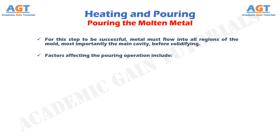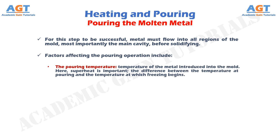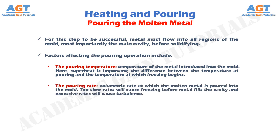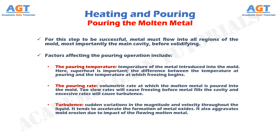Factors affecting the pouring operation include: the pouring temperature — the temperature of the metal introduced into the mold, where superheat is important, which is the difference between the temperature at pouring and the temperature at which freezing begins. The pouring rate — the volumetric rate at which the molten metal is poured into the mold; too slow rates will cause freezing before metal fills the cavity, and excessive rates will cause turbulence. And turbulence, which involves sudden variations in the magnitude and velocity throughout the liquid; it tends to accelerate the formation of metal oxides and aggravates mold erosion due to impact of the flowing molten metal.